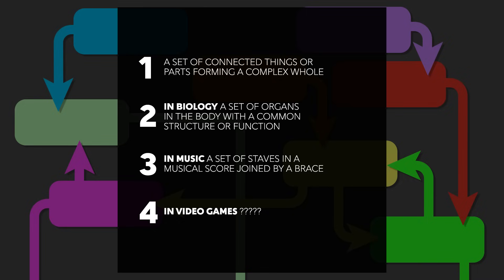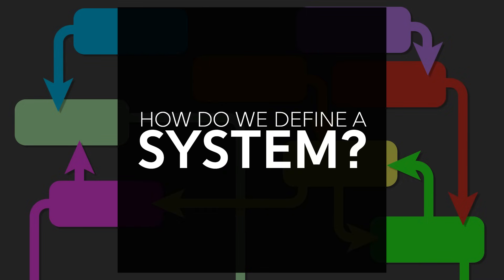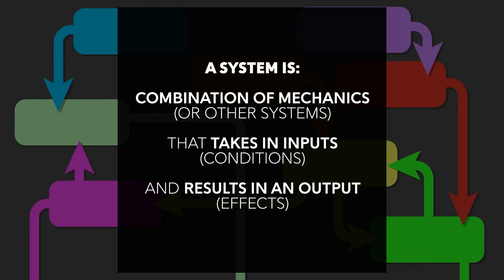But to understand systemic games, it is critical to understand what systems are and how they relate to games. So how do we define a system? The best answer I've been able to come up with is that a system is a combination of multiple mechanics or other simpler systems that take in inputs, conditions, and result in an output.